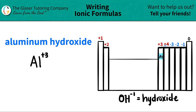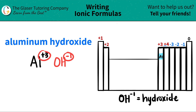You have to memorize that. Hydroxide is always OH with a minus one. Now I have my two components. I do this little trick where I take these charges and I crisscross them down to just get the subscripts and how many of each I need. So this three will crisscross down telling me that I need three OHs.